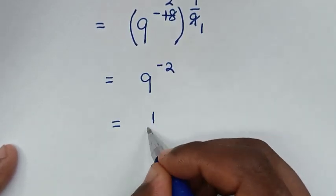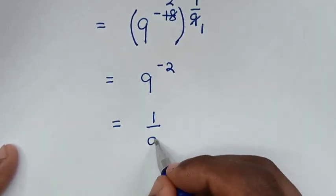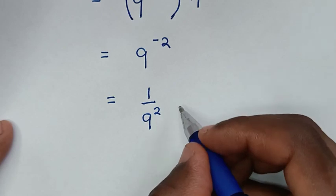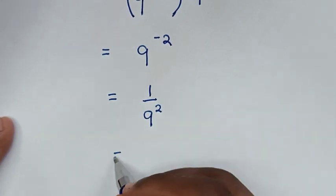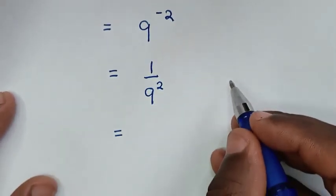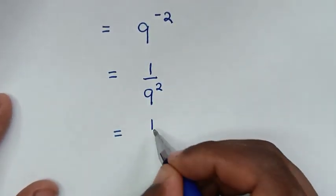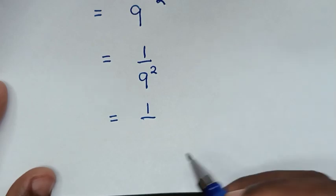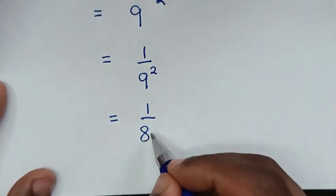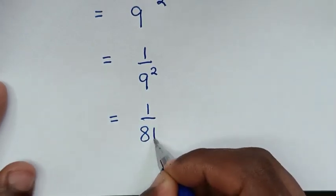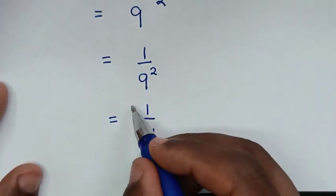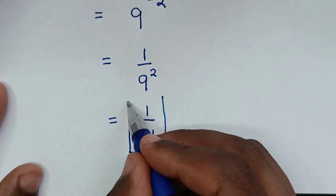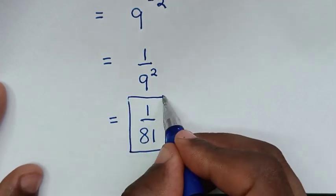Then it will be equal to: 9 power of negative 2 is the same as 1 over 9 power of 2, which is equal to 1 over 9 squared, which is 81. Therefore, 1 over 81 is our final answer.